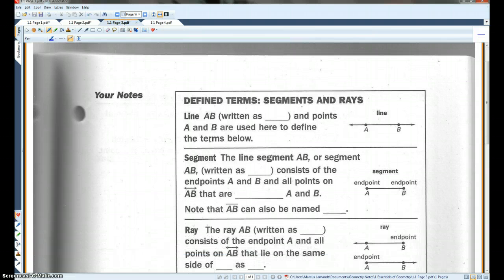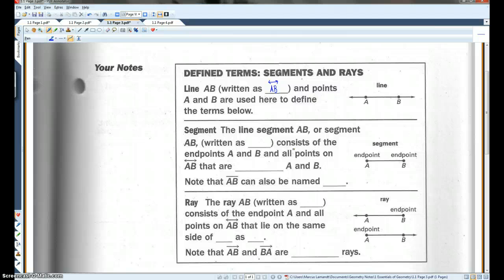All right. Page three. Define terms, segments, and rays. Line AB, written like this. And points A and B are used here to define the terms below. Okay. Line segment AB, or segment AB, written like this. Line AB consists of the endpoints A and B and all the points on line AB that are between A and B. So basically, from here to here and everything in between. Everything in between represents this segment. Okay. Segment AB can also be named BA.